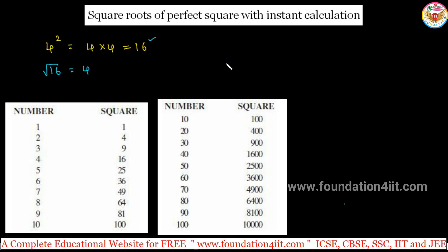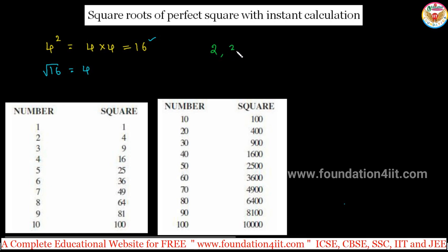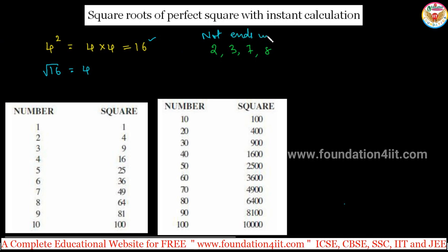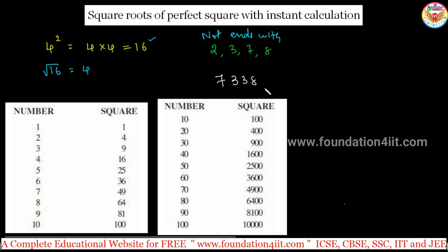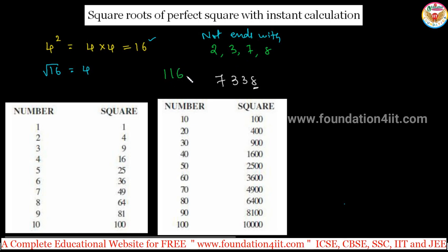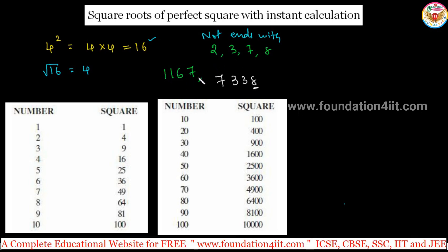One important thing to notice about perfect squares: any perfect square will never end with the digits 2, 3, 7, or 8. For example, 7338 is not a perfect square because it ends with 8. Similarly, 1167 ends with 7, so it is not a perfect square. Just remember: perfect squares never end with 2, 3, 7, or 8.